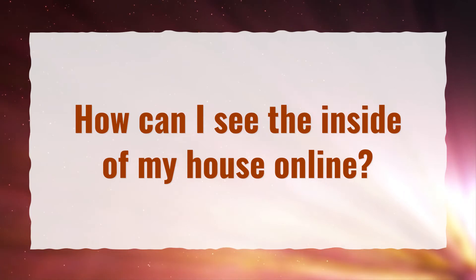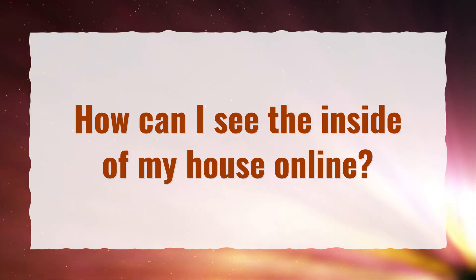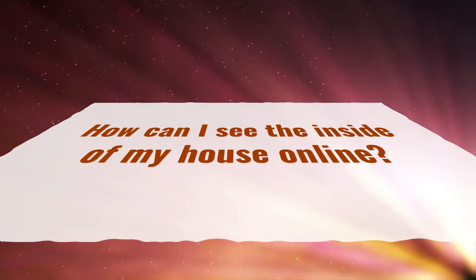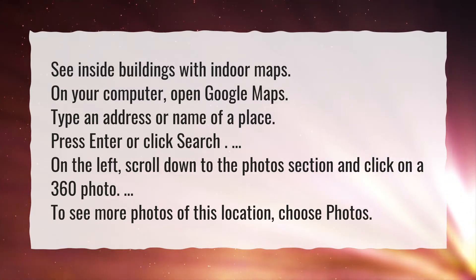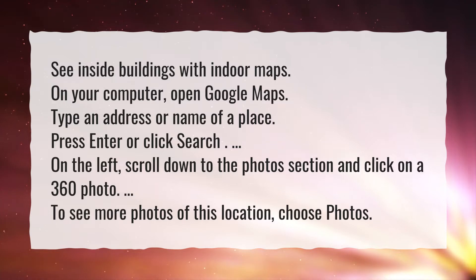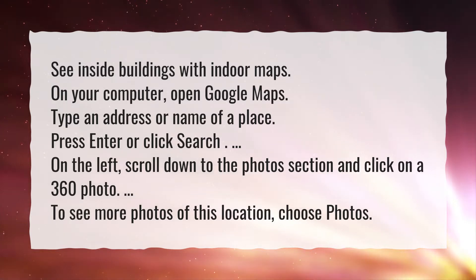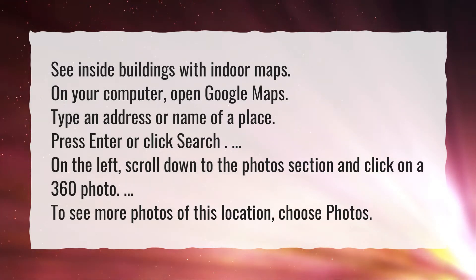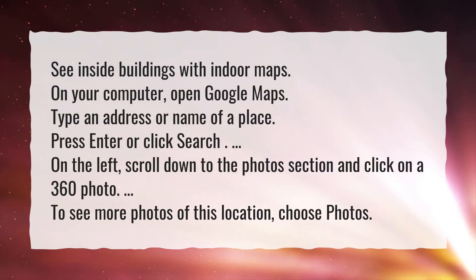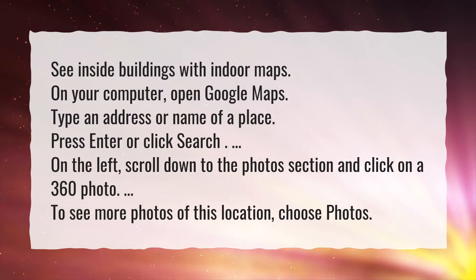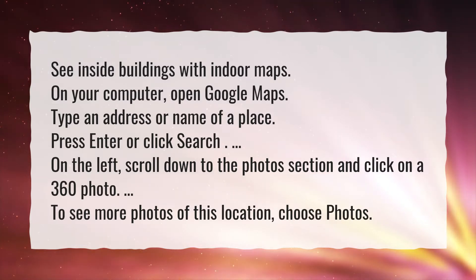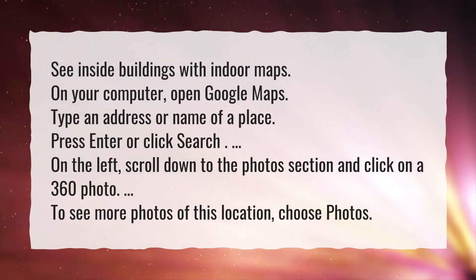How can I see the inside of my house online? See inside buildings with indoor maps. On your computer, open Google Maps. Type an address or name of a place. Press Enter or click Search. On the left, scroll down to the Photos section and click on a 360 photo. To see more photos of this location, choose Photos.